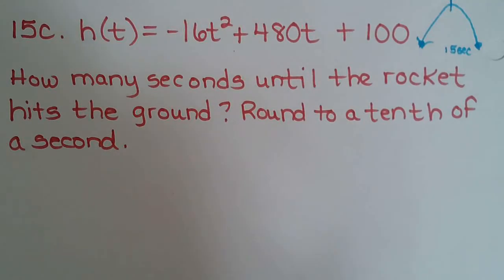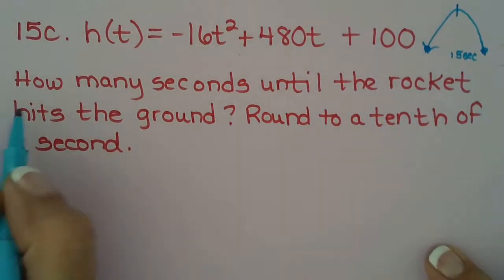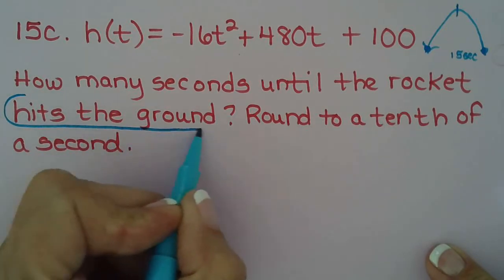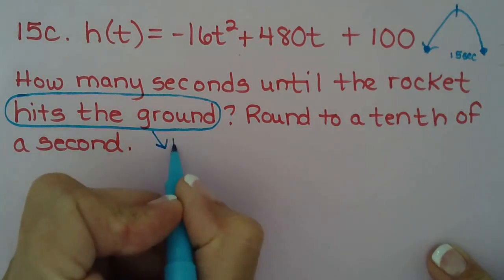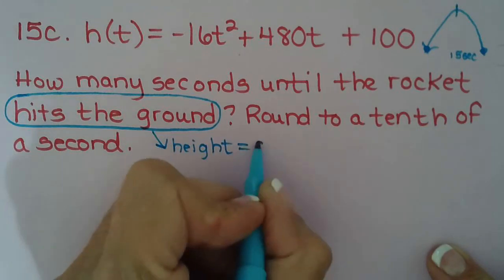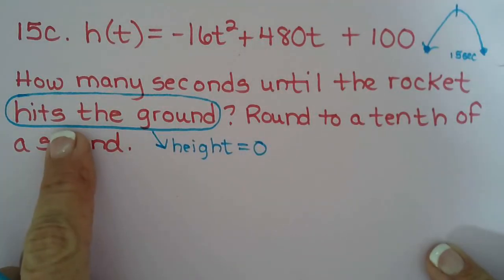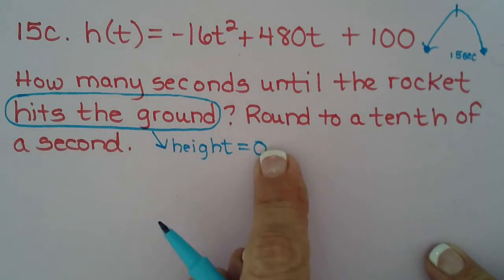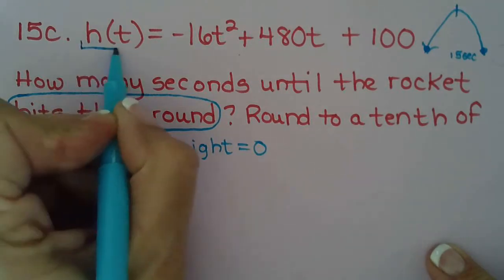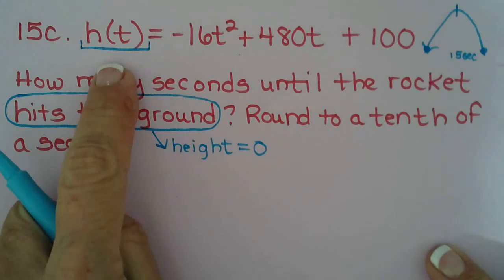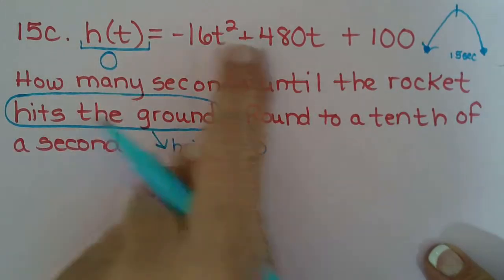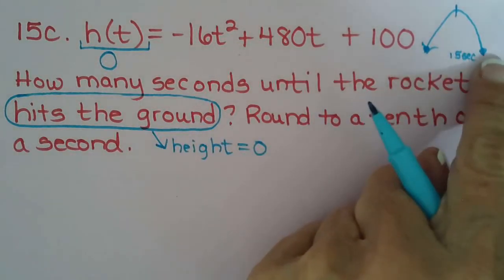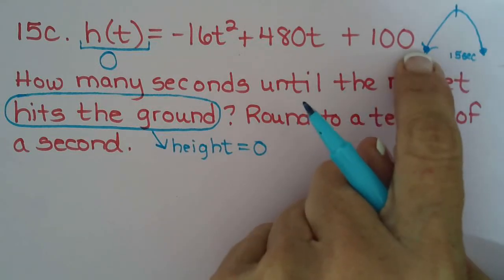So the other thing you need to go into this problem knowing is that—and this was something we learned in Chapter 4, but it was highly missed—hits the ground means height is 0, because height is in feet above the ground. Well if it's back on the ground, that means the height is 0 because it's 0 feet tall. Many of you did this one wrong on Chapter 4. You replaced all the t's with 0. Well at time 0 it's not going to be over here. At time 0 it's right here. Hasn't been shot up yet.